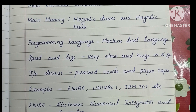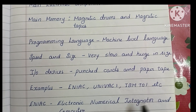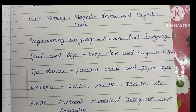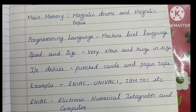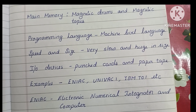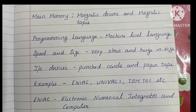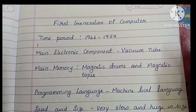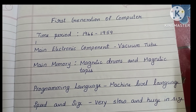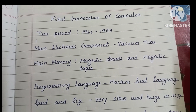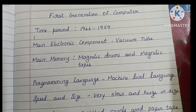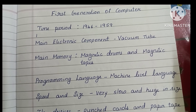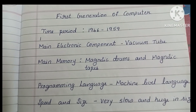The full form of ENIAC is Electronic Numerical Integrator and Computer. The full form of UNIVAC is Universal Automatic Computer. These are the main characteristics of the first generation of computers. If you like this video, please like and subscribe.